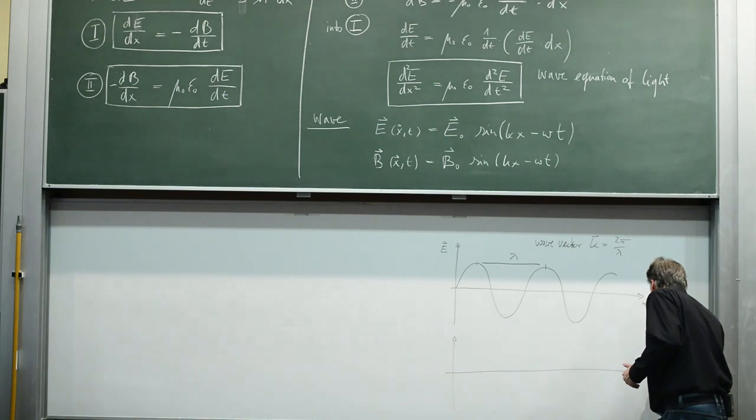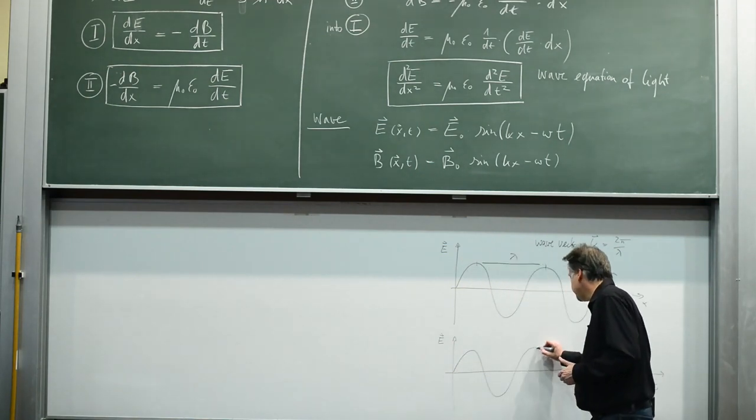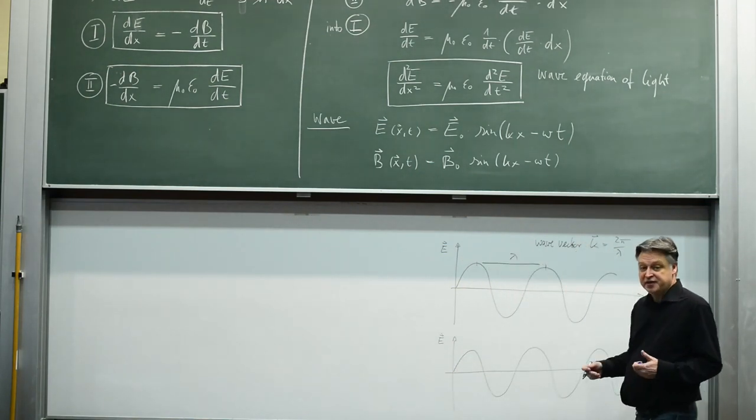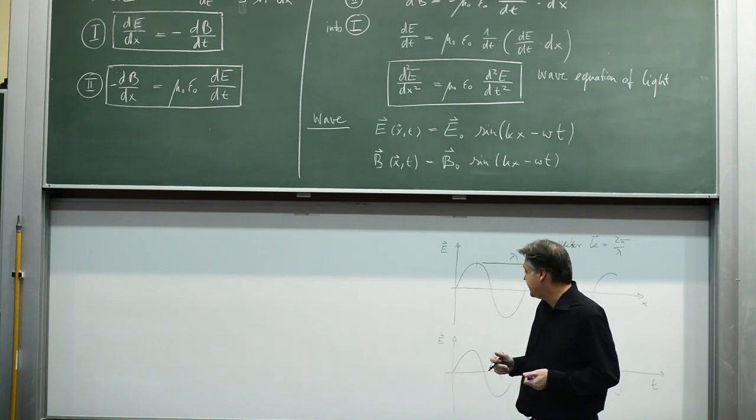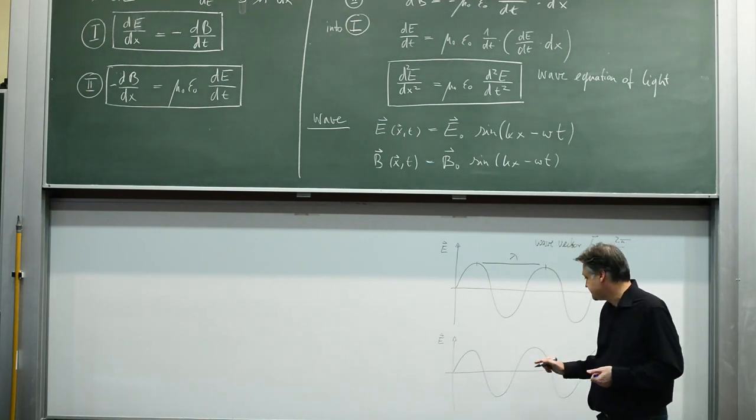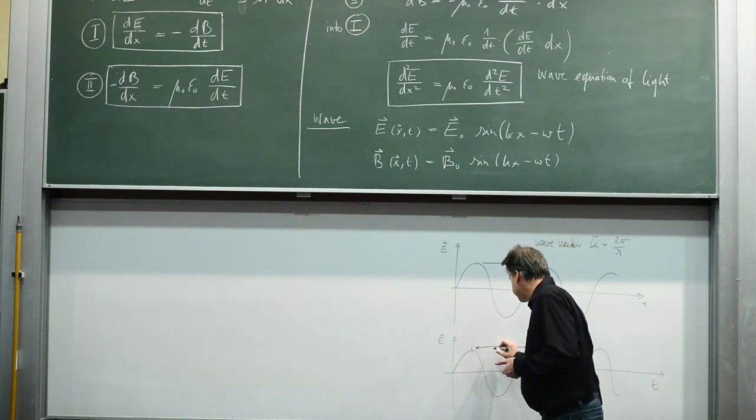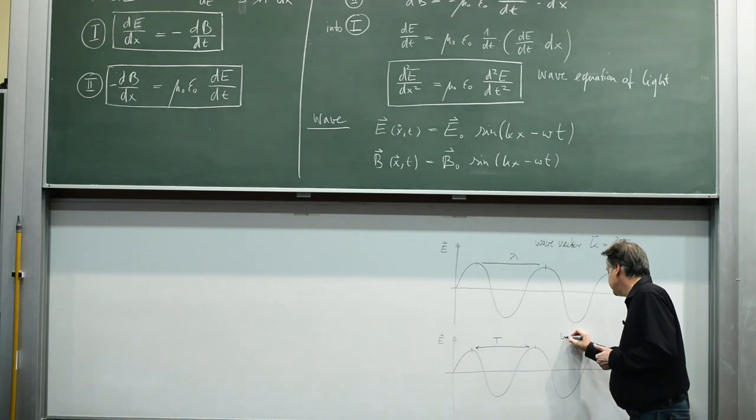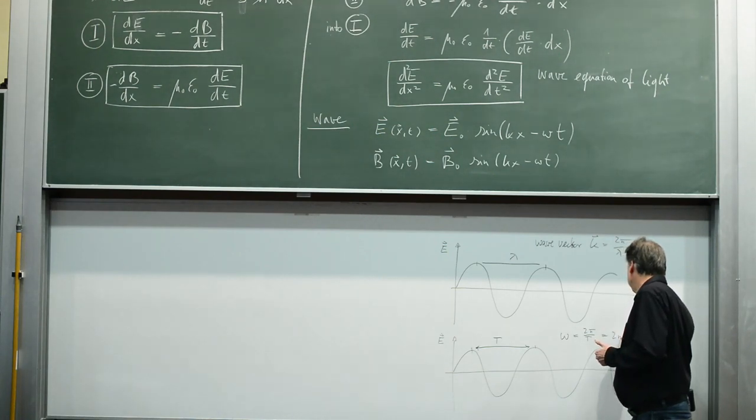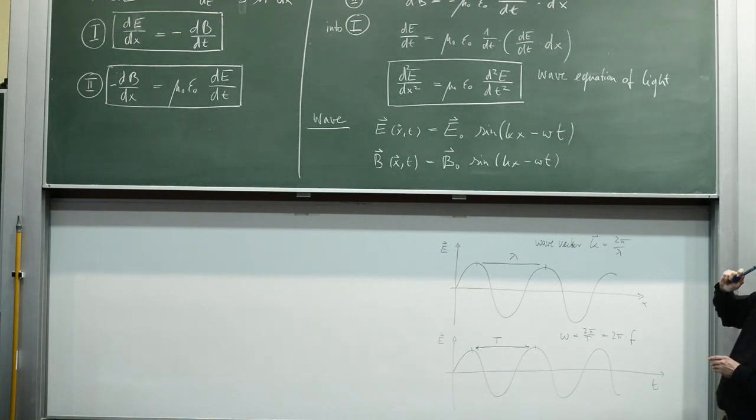In time we get a similar looking function. Again think about water waves at Coogee beach. If you are standing half the way in the water, the water level is moving up and down in time. Here we also have a certain length scale, capital T, the duration of one full oscillation. The angular frequency omega is 2 pi over T, or 2 pi times the frequency.